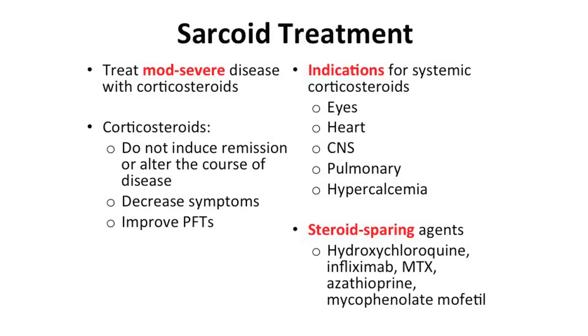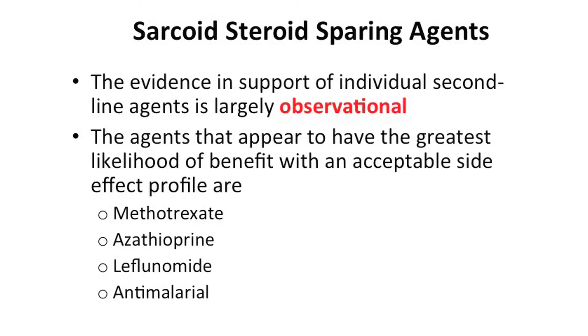When we talk about treatment of sarcoid, not everyone needs treatment. You definitely want to treat if they're symptomatic — things like lung involvement where people are having cough and shortness of breath are indications to treat with steroids. And anytime we start steroids, there are going to be side effects: Cushingoid presentation, osteoporosis, poorly controlled diabetes, poor wound healing. You want to stop the steroid as soon as you start it, but sometimes that's not easy — and that's why we use many steroid-sparing agents.